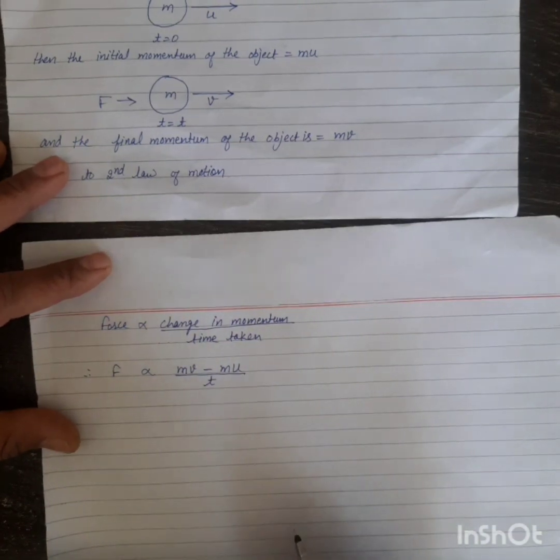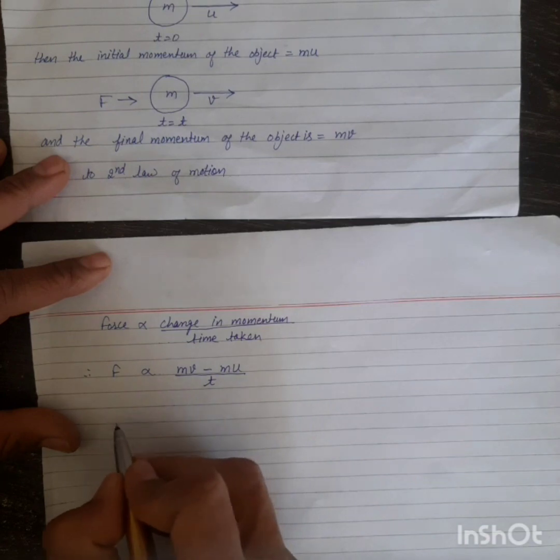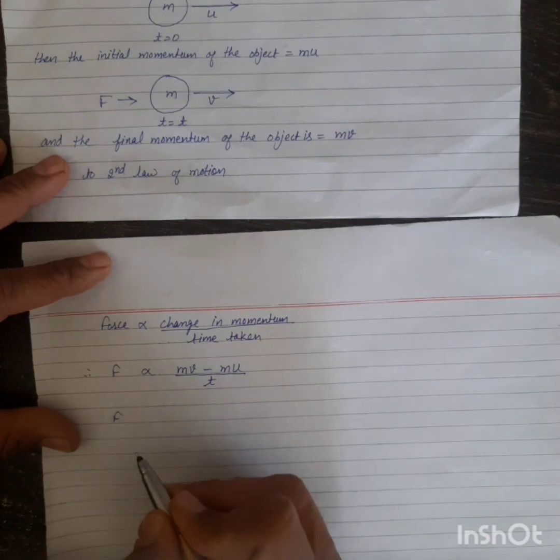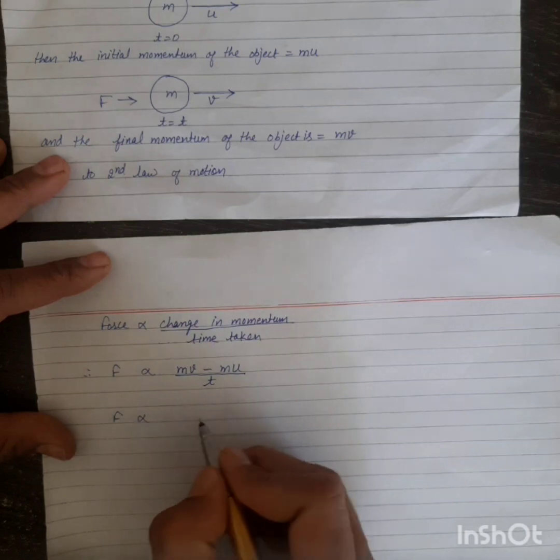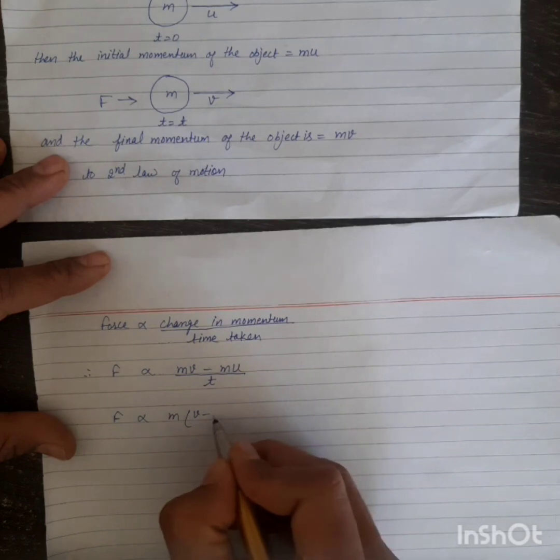That is t, or F is directly proportional to m times (v minus u) divided by t.